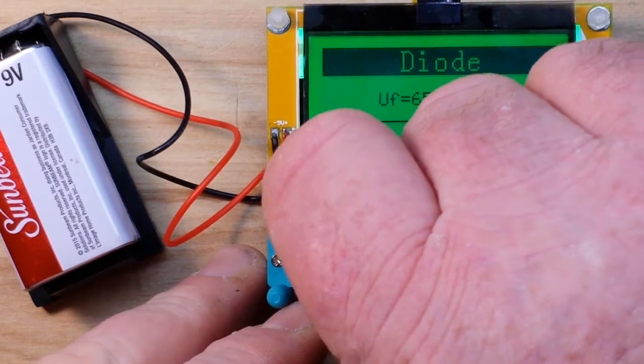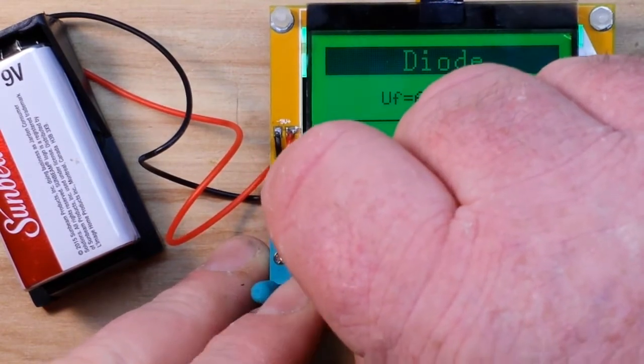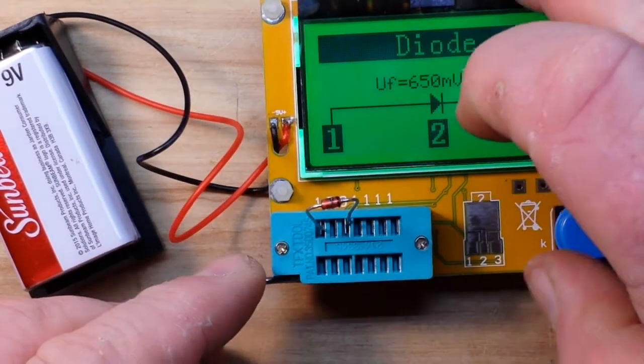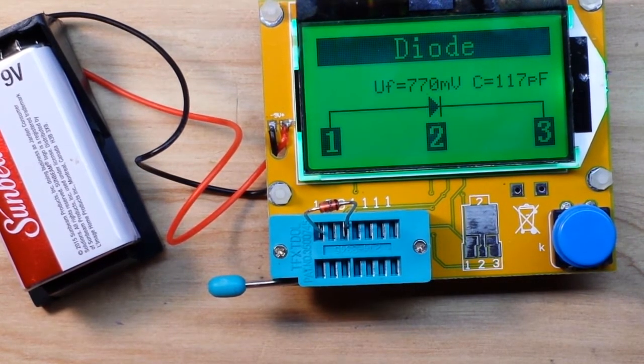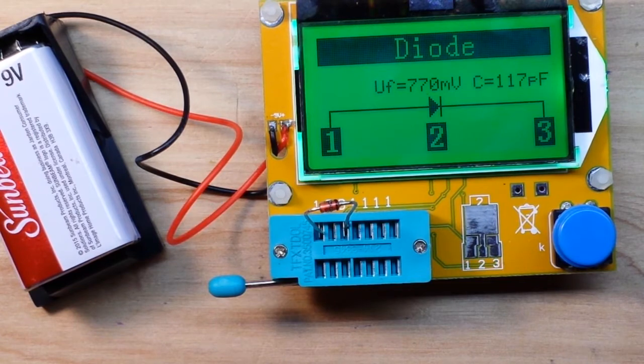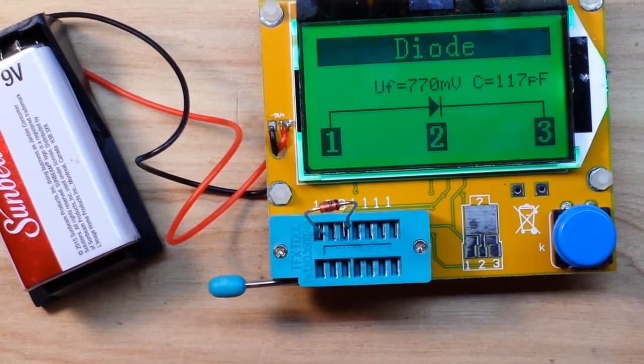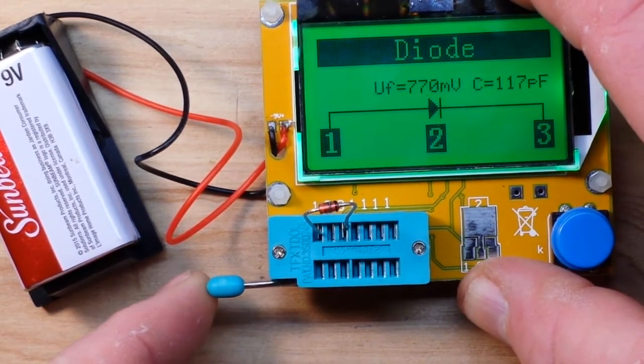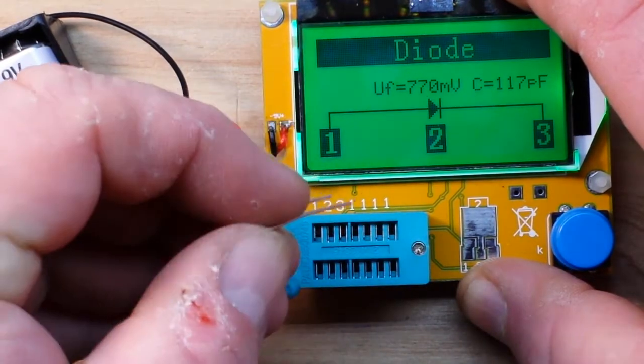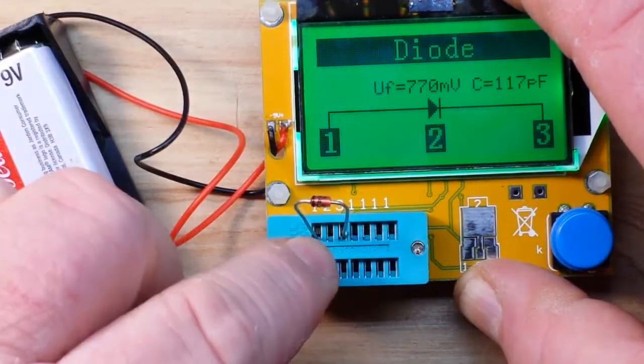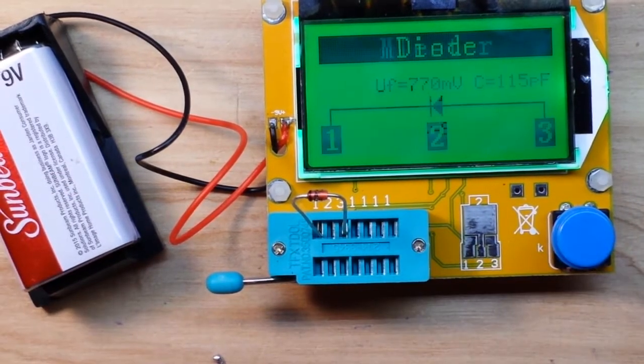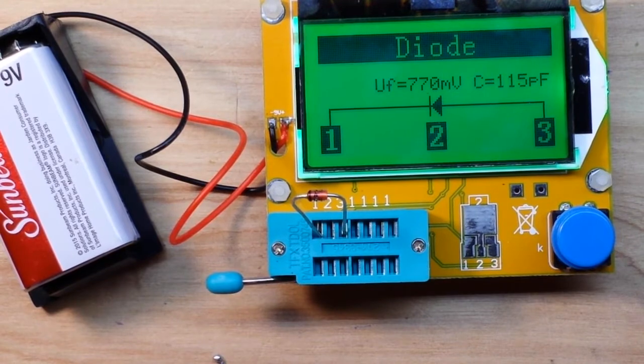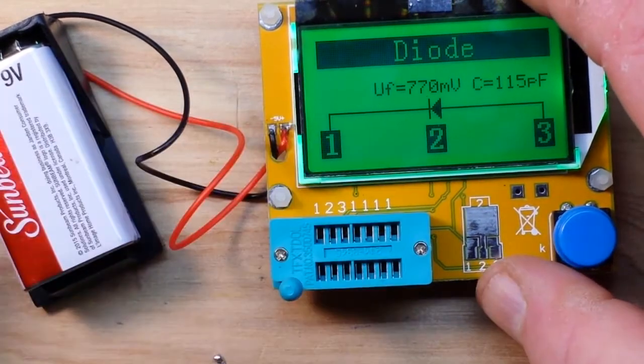How about a zener? This is a 5-volt zener. And it knows it's a diode in pins 1 and 3, 770 millivolts with a capacitance of 117 picofarads. And if we put it in backwards it should read pretty much the same because this thing can read in either direction. Yeah, pretty much the same.